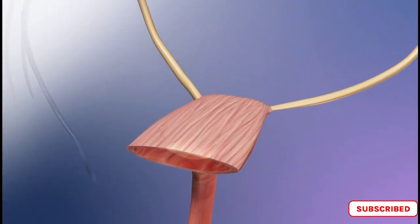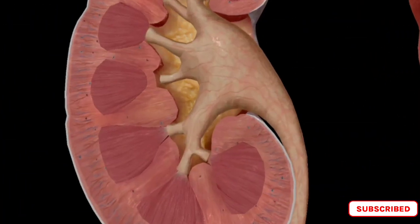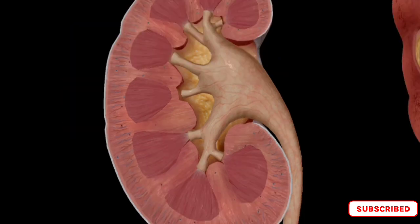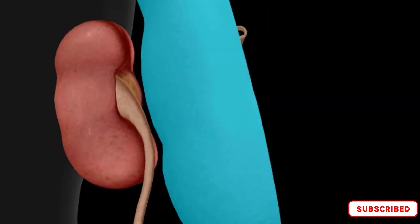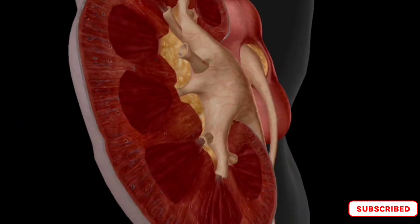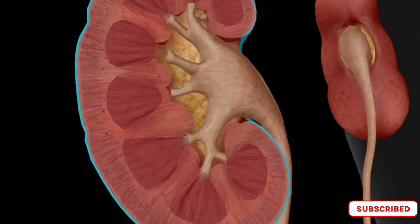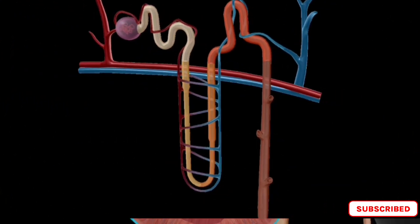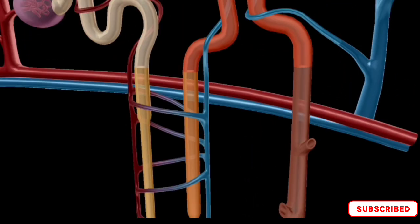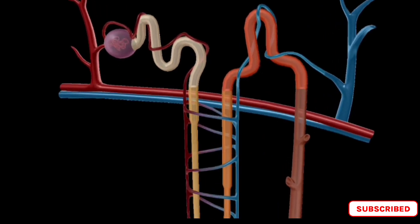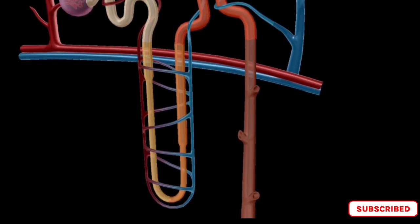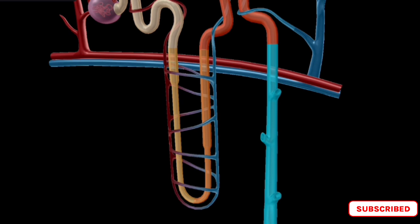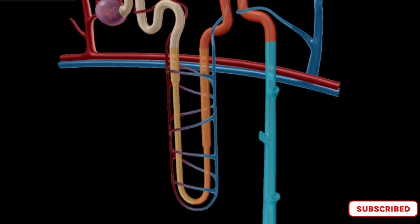The urine then passes through the urethra and is expelled from the body. The kidneys are bean-shaped organs located on either side of the spine, behind the abdominal cavity. They are covered by a layer of connective tissue called the renal capsule, which protects them from trauma. The nephron is the functional unit of the kidney and is responsible for filtering blood and producing urine. It is composed of two main parts: the renal corpuscle and the renal tubule. The renal corpuscle consists of the glomerulus, a network of capillaries, and Bowman's capsule, a cup-shaped structure that surrounds the glomerulus.